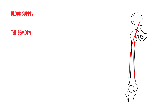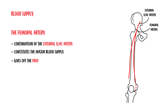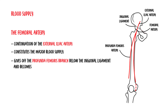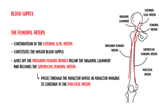The femoral artery, which is a continuation of the external iliac artery, constitutes the major blood supply to the lower limb. The femoral artery gives off the profunda femoris — a branch below the inguinal ligament — and becomes the superficial femoral artery. The superficial femoral artery ends as it passes through the adductor hiatus in adductor magnus to continue as the popliteal artery.